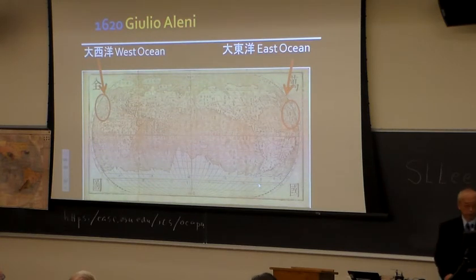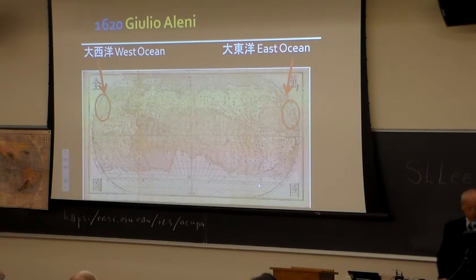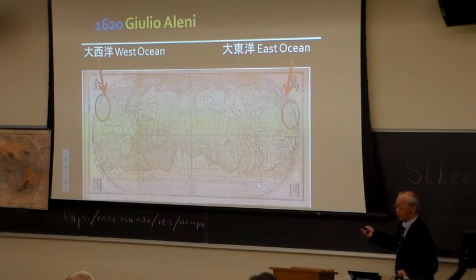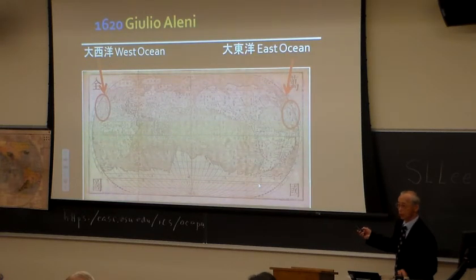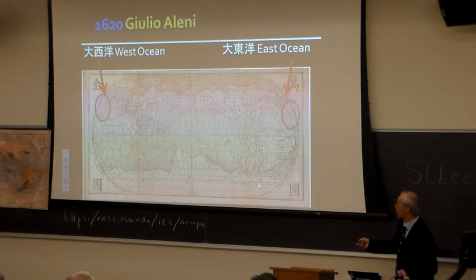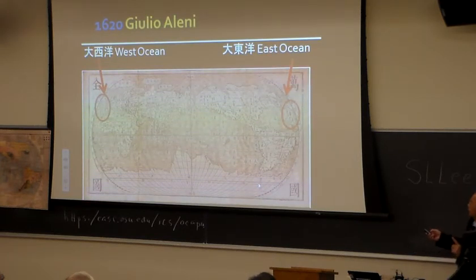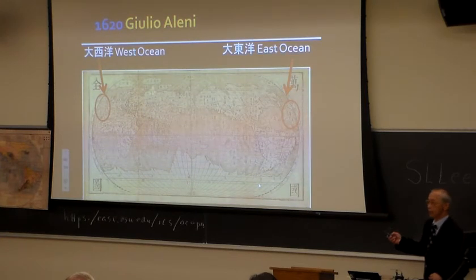This is after Matteo Ricci — a map by Julio Aleni. He drew another map, also labeled in Chinese. This is 'West Ocean' here, and this is 'Da Dong Yang' — the Great East Ocean. If we know our geography today, these are exactly the same ocean: that's the Atlantic Ocean. So that's another error. That means the one who drew this map was some European who drew it and didn't know how to place the oceans correctly. But Matteo Ricci's map got it right — not this one. The difference is Julio Aleni never went to Beijing; he never had access to the Imperial Archive.